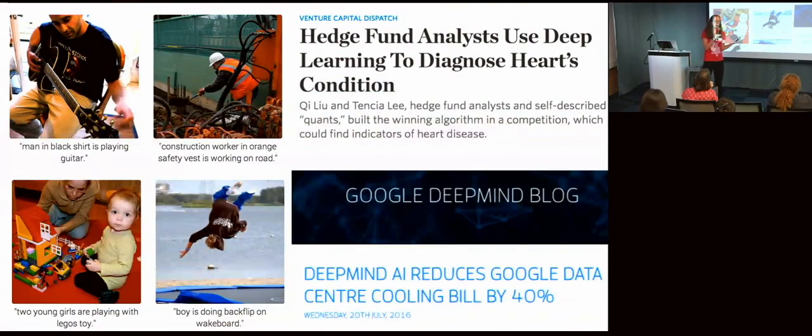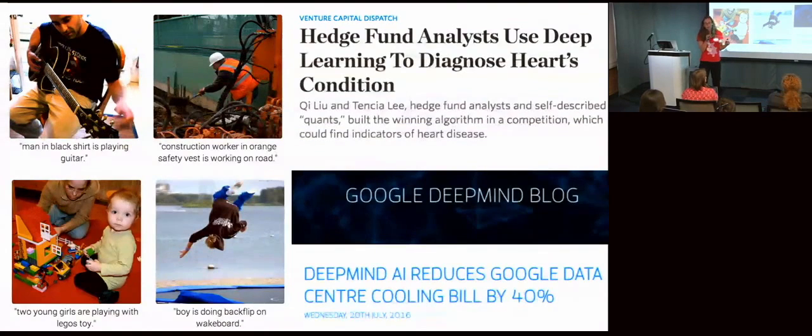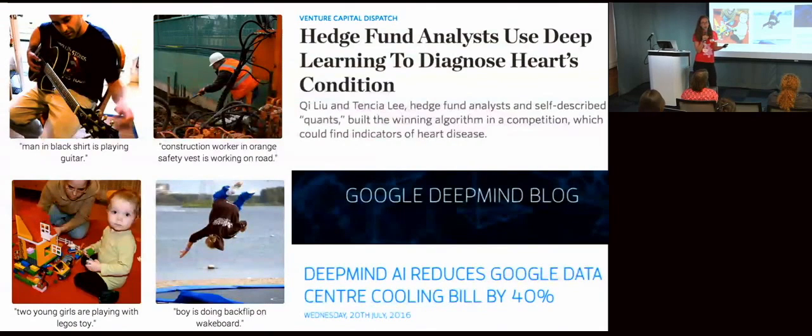And then Google's data centers, where all their servers generate a huge amount of heat. Just earlier this summer, Google announced that they are using deep learning to reduce their cooling bill by 40%, which is huge.